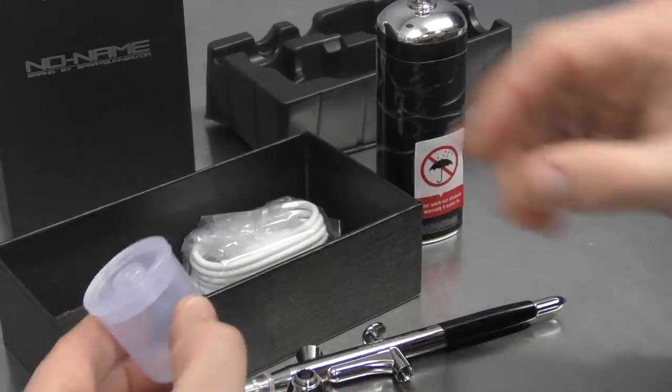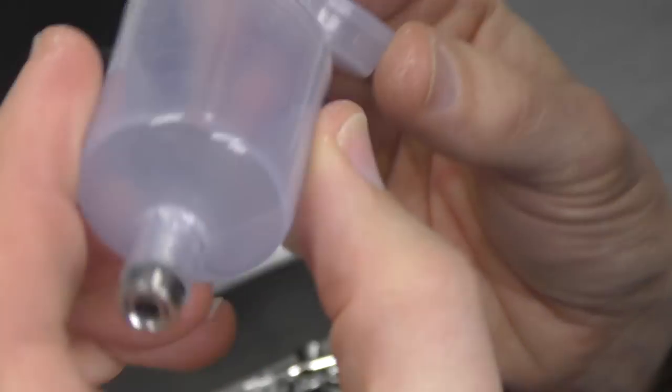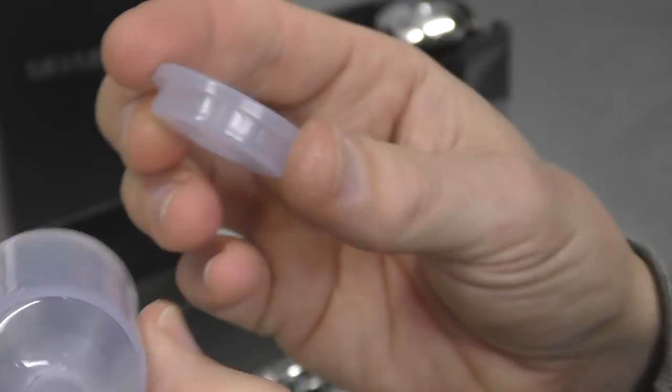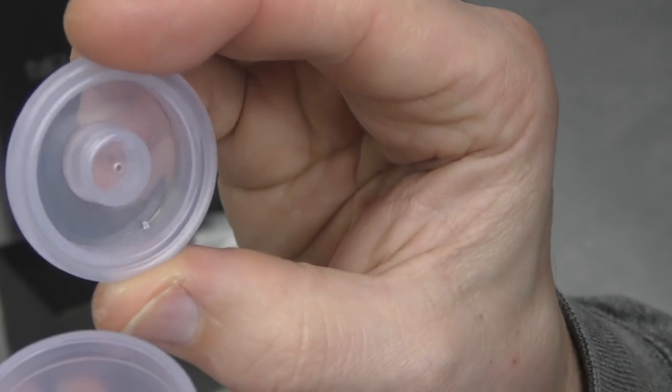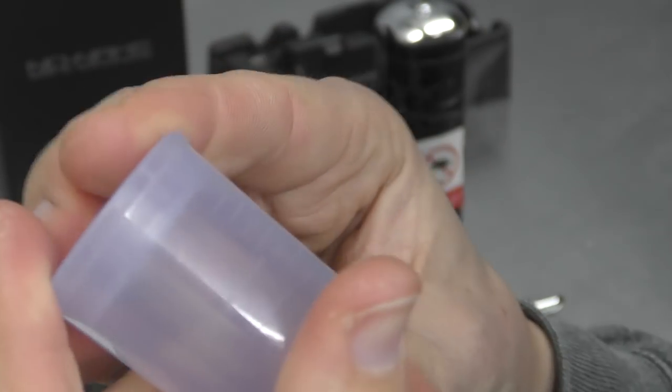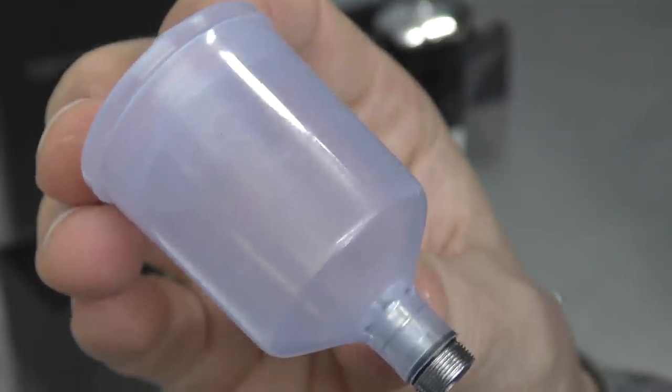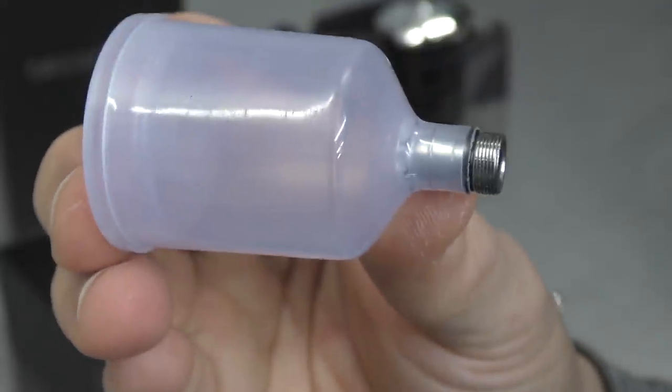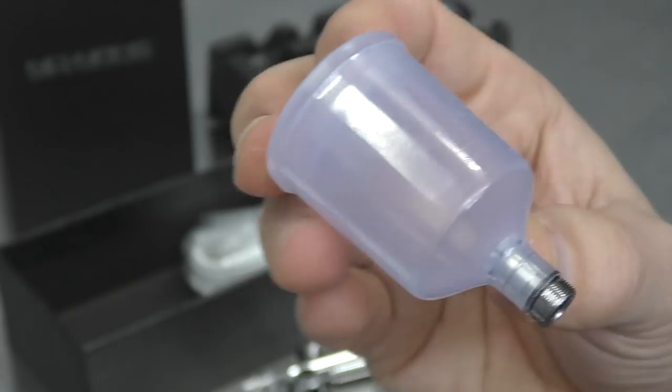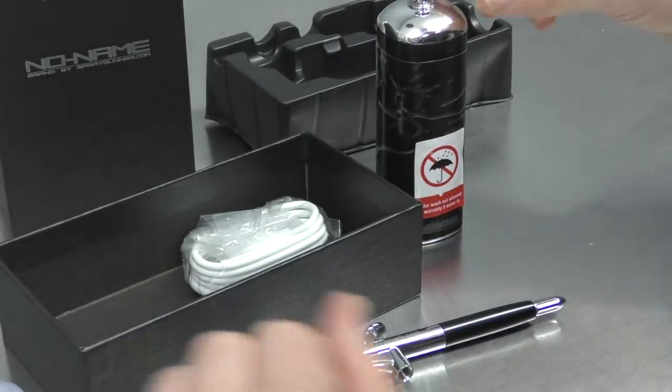The see-through one screws in with a nice lid, seals up nicely. Obviously if you want to do some larger canvases or something, then you could utilize this. Just have to see how the air pressure handles that battery, where you hook it up to charge.